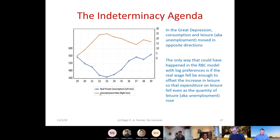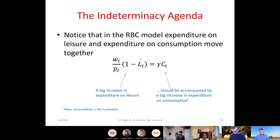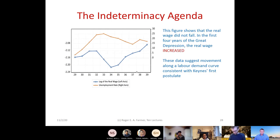Showing the unemployment rate on a scale of zero to thirty: the consumption of leisure — that is, unemployment — goes up sharply in the first four years of the Great Depression, while consumption moves sharply in the opposite direction. It's possible these two things move in opposite directions because of offsetting movements in the real wage, but that's not what happened either: rather than decreasing, the real wage actually increased in the first three years of the Great Depression.